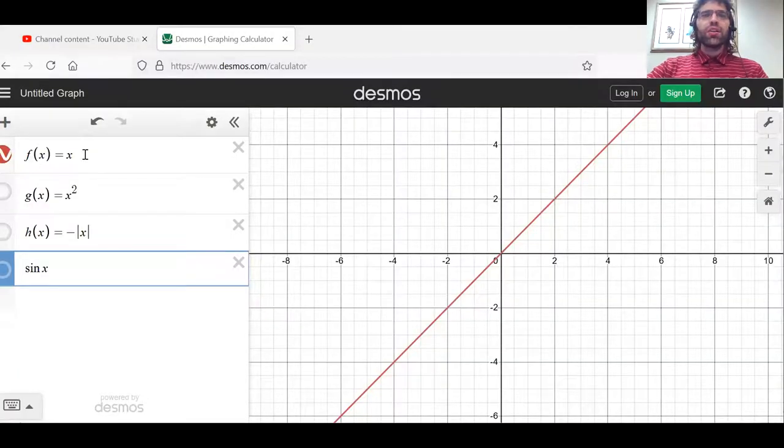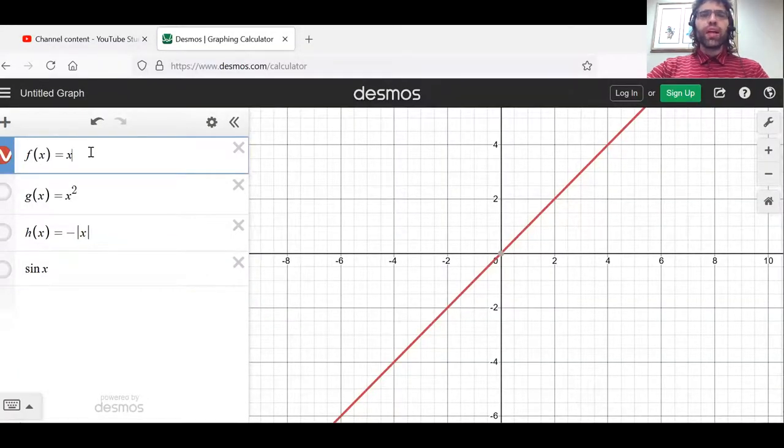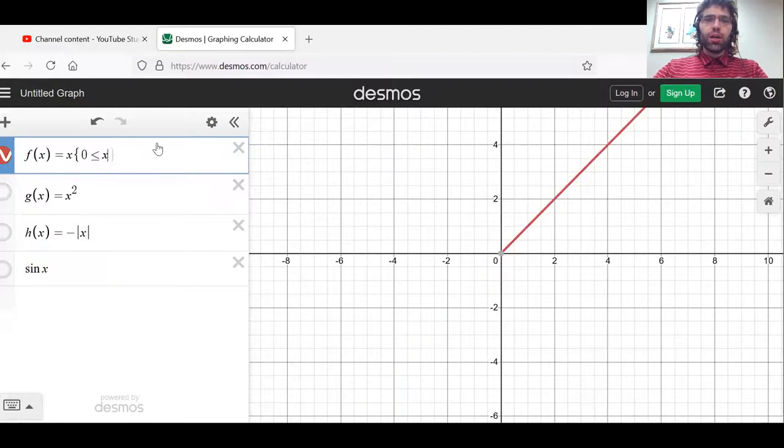Let's go back to this example, f of x equals x. On the real number line, this function has no absolute extrema. But if you only look at this on the interval from zero to two, suddenly there's an absolute minimum and an absolute maximum.